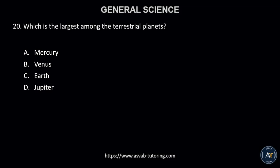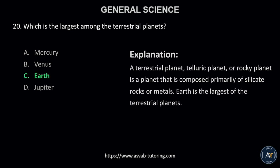Number 20. Which is the largest among the terrestrial planets? A. Mercury, B. Venus, C. Earth, or D. Jupiter? The correct answer is letter C, Earth. A terrestrial planet, telluric planet, or rocky planet is a planet that is composed primarily of silicate rocks or metals. Earth is the largest of the terrestrial planets.